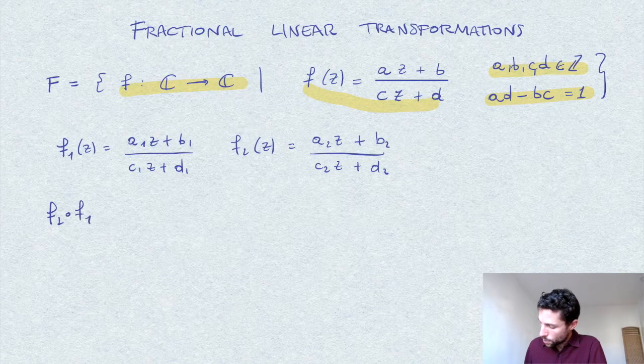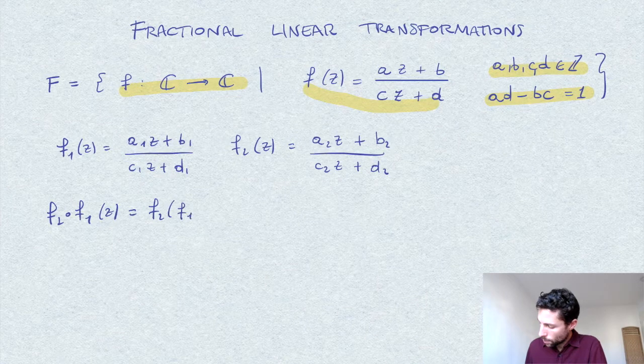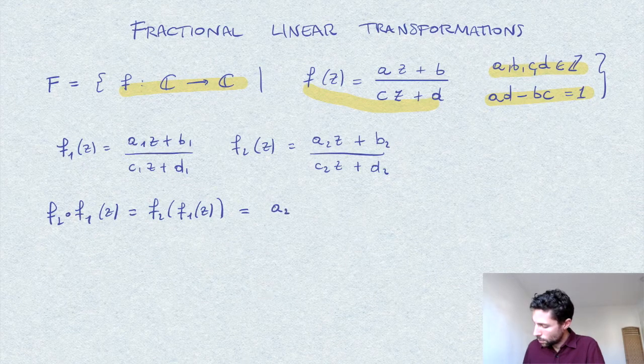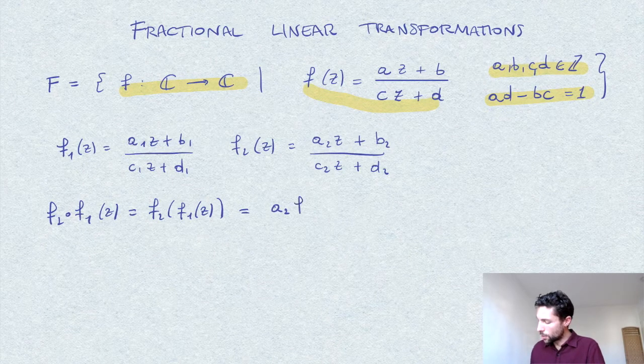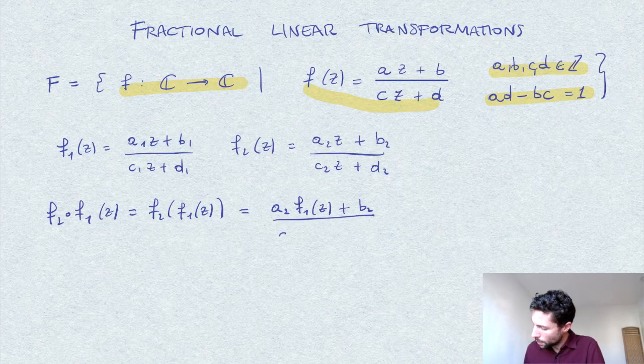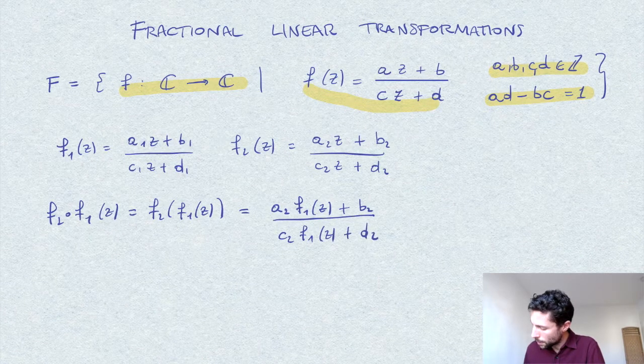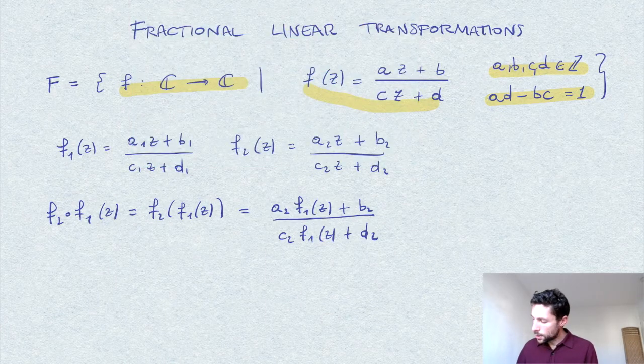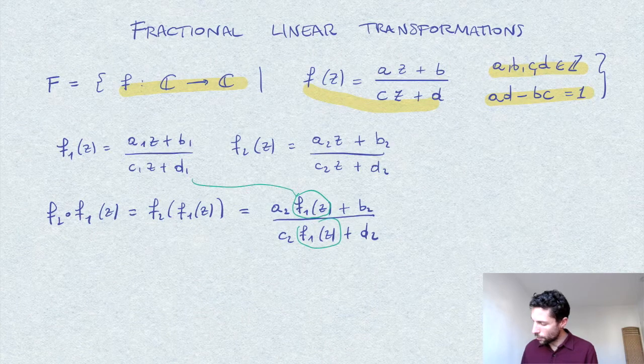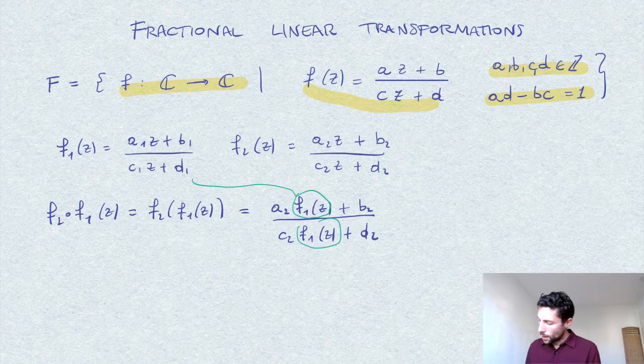So we compute f₂ composed with f₁ of z. By definition of f₂, this is a₂ times f₁(z) plus b₂ over c₂ times f₁(z) plus d₂. Of course, here I will substitute for f₁ this expression.